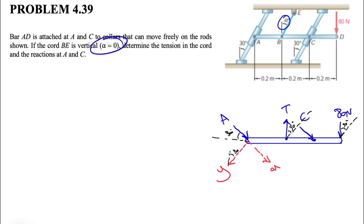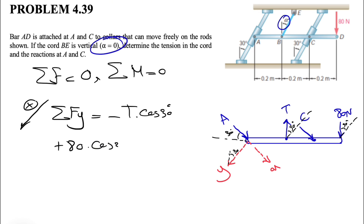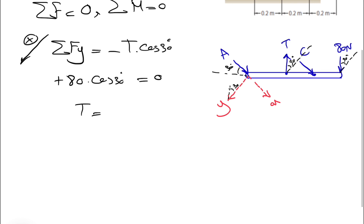Starting with our equilibrium equations — sum of all forces equals zero and sum of all moments equals zero — we begin with the sum of forces in the y-direction, which cancels out the two unknowns at A and C. The y-component of T is negative, giving minus T times cosine 30 degrees, plus the positive y-component of the 80 Newton force times cosine 30 degrees, equals zero. This gives us T equals 80 Newtons.